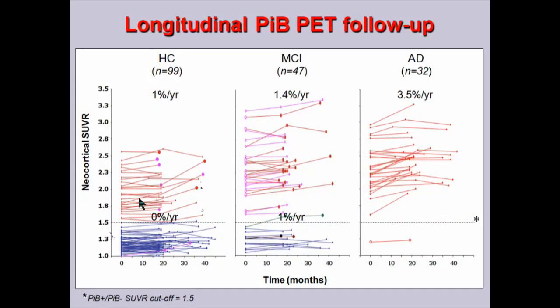The AIBL study has been going for over four years; we're just collecting three-year data, but the 18-month data are coming through. Looking at individual subjects re-scanned at approximately 18 to 20 months, we can see the rates of accumulation of amyloid per year in the brain. The Alzheimer's population is increasing at about 3.5% per year, the MCI group at 1.4% per year, and those who are negative are not really changing. The healthy control group is also increasing at a very slow rate, putting parameters around the rates of amyloid accumulation in the brain.